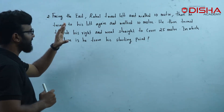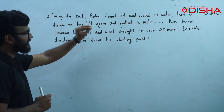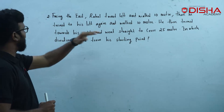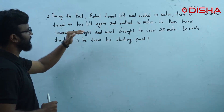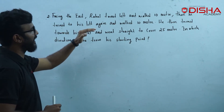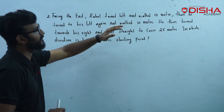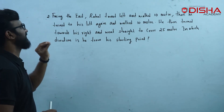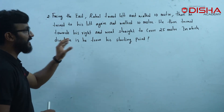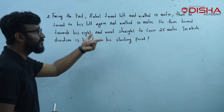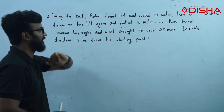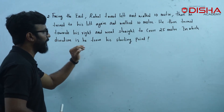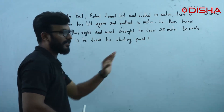Facing east, Rahul turned left and walked 10 meters. Then he turned to his left again and walked 10 meters. He then turned towards his right and went straight to cover 25 meters. In which direction is he from his starting point?